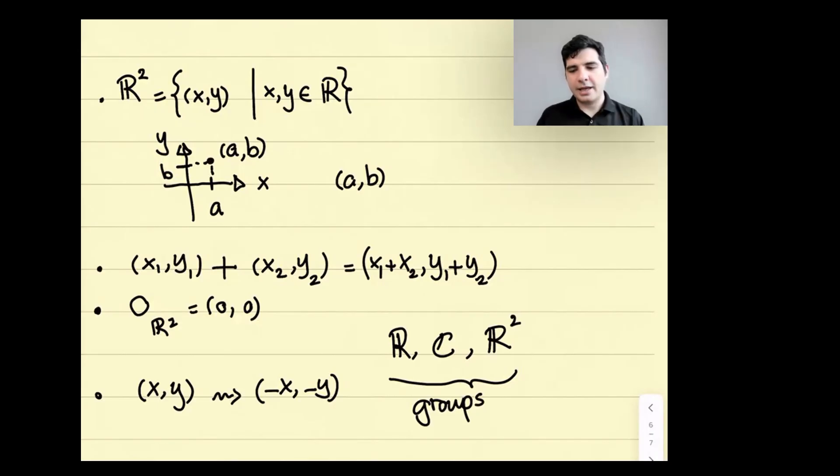So now we have three examples of groups. We have R, we have C, and we have R². These are all examples of groups, and they're actually closely related. The point is that in math, sometimes some objects are kind of the same, but they just look different.